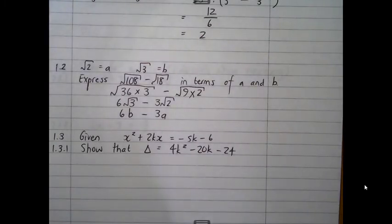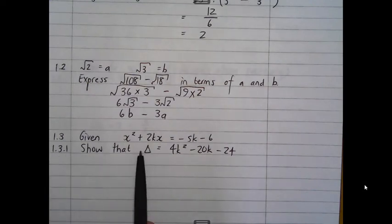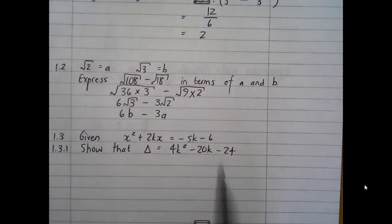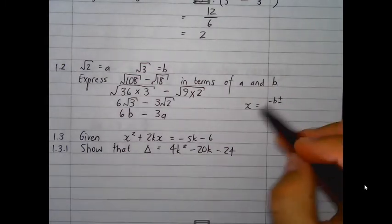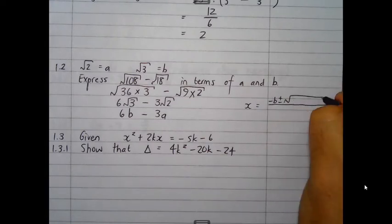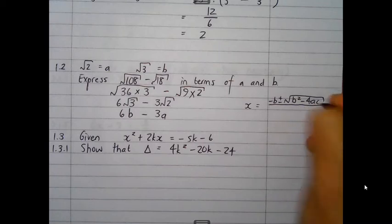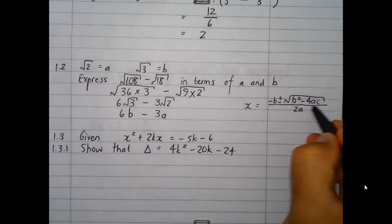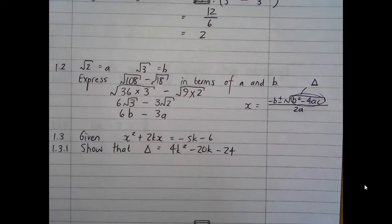Moving to question 1.3. Given x squared plus 2kx equals negative 5k minus 6, we need to work with the discriminant, delta. The quadratic formula is x equals minus b plus or minus the square root of b squared minus 4ac, all over 2a. The expression underneath the square root is the discriminant, delta, and its value tells you the nature of the roots — whether they are real, non-real, equal, rational, or irrational.